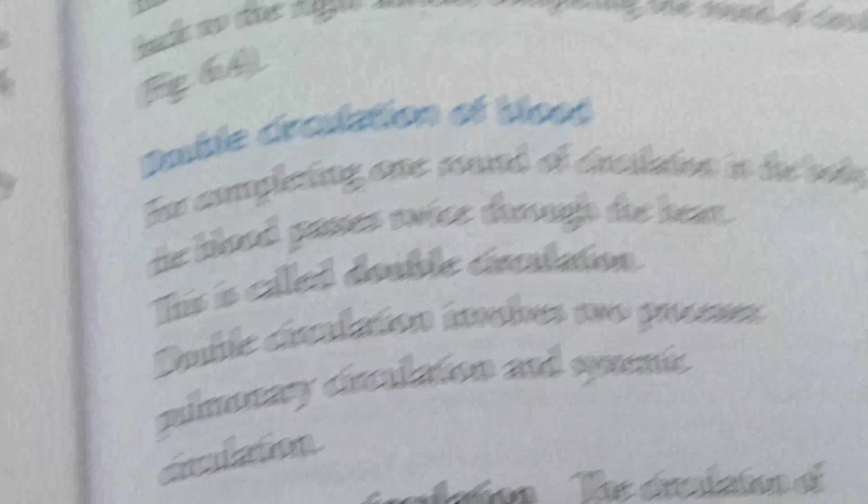From the right auricle, the blood flows into the right ventricle, and then to the lungs through the pulmonary arteries. So impure blood is received by the right auricle, which pushes that blood into the right ventricle, and then it goes to the lungs through pulmonary arteries. Pulmonary arteries basically carry the deoxygenated blood from the right ventricle to the lungs.